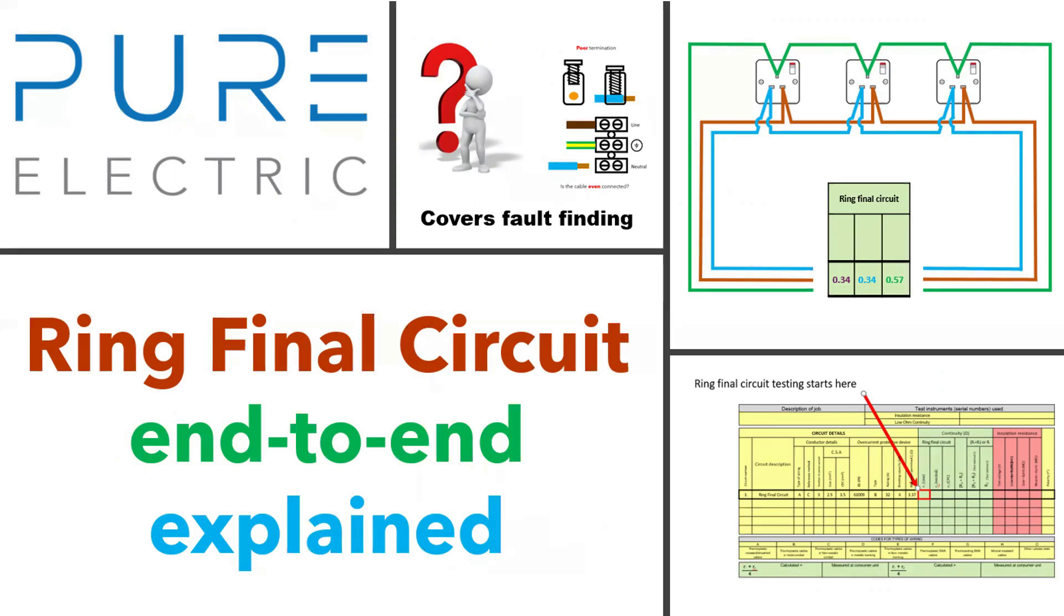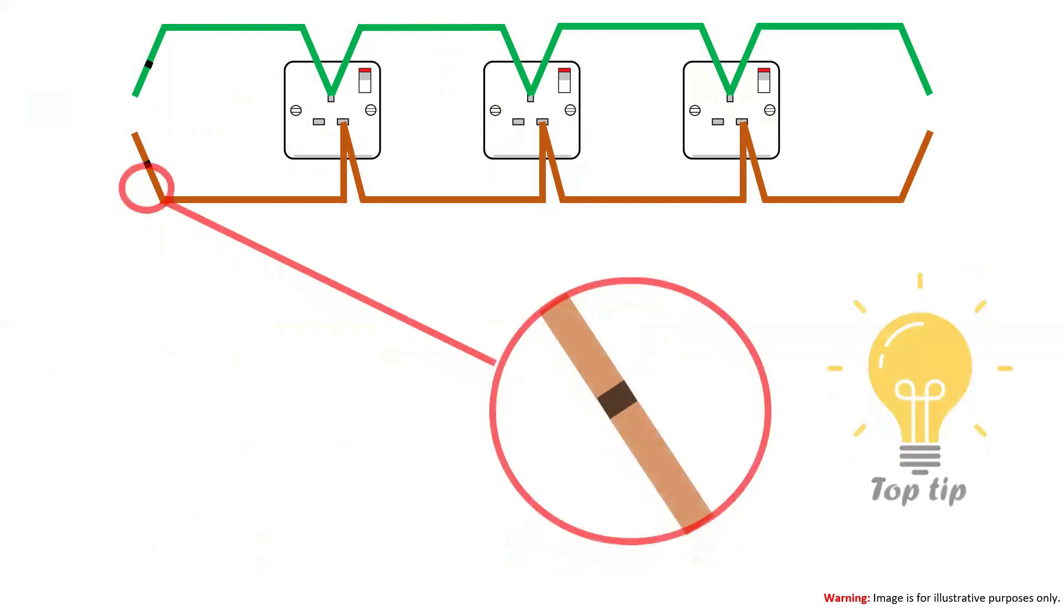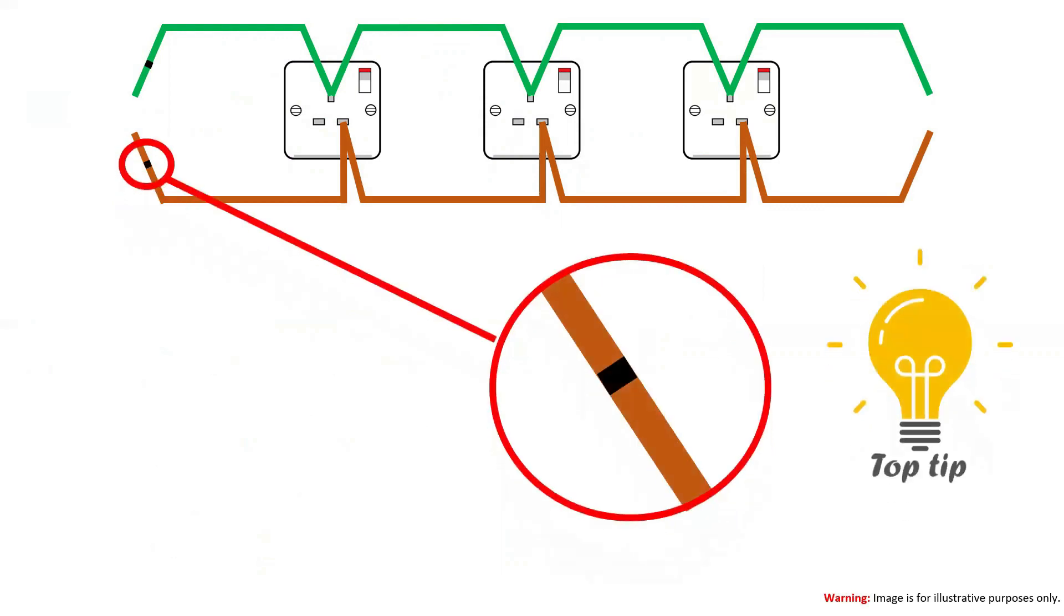The link for the video is on the screen. Here I have drawn a ring final circuit showing just the line and CPC conductors. A top tip that I would like to recommend to you is to clearly mark all the conductors on one leg of the ring. That way you can ensure that you have the right conductors connected together. One way of doing this is to use a permanent marker.